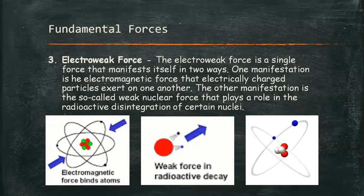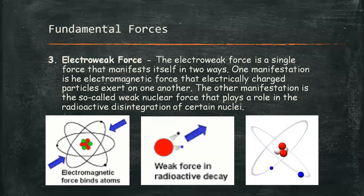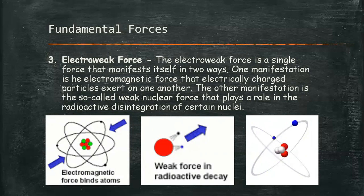When the electromagnetic force is released, it gives us chemical energy, which is converted to other usable energy such as electrical or heat energy. The weak nuclear force is responsible for the radioactive decay of elements such as uranium, plutonium, or radium. When this force is released, it produces nuclear energy, which can also be converted to electrical or heat energy.